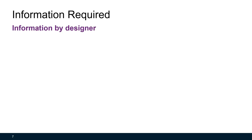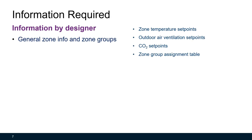To design control sequences for an HVAC system, you first need some information from the HVAC system designer. You need general zone information and zone group information such as zone temperature set points, outdoor air ventilation set points, CO2 set points, and zone group assignment tables.